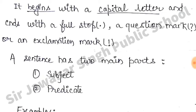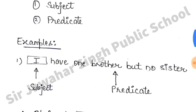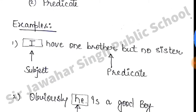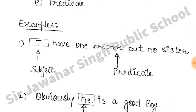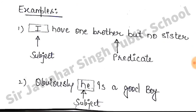The sentence has two main parts. One is the subject and the other is the predicate. The most important part of the sentence is the subject. The subject generally comes at the start of the sentence, but it doesn't always have to be.